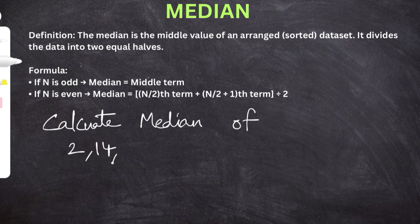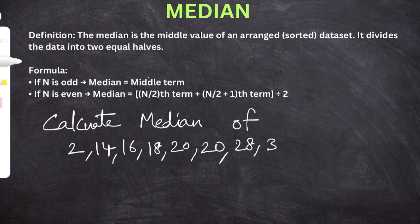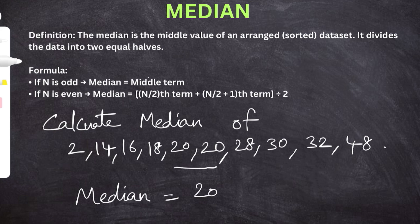We have to calculate the median of 2, 14, 16, 18, 20, 20, 28, 30, 32 and 48. We check whether n is odd or even — counting gives us 10 observations, so n is even. We take the (n/2)th and (n/2 + 1)th terms. In this data those two numbers are 20 and 20, so median = (20 + 20) / 2 = 20.